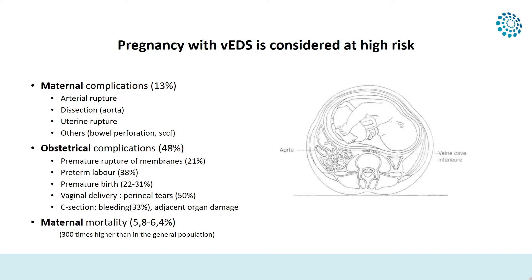Illustrated here is a cross-section of the abdomen of a pregnant woman with a baby. The vasculature is quite compressed between the vertebra and the uterus, so you can easily understand that there may be some arterial problems that occur during pregnancy in vascular EDS.